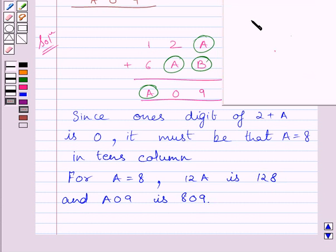On subtracting 128 from 809 we get 681 and this 681 represents the number 6AB. So, we get the required value of B is 1.